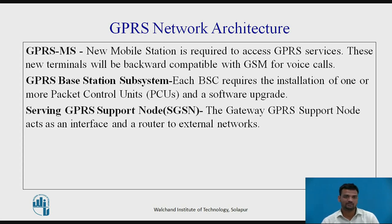GPRS Mobile Station (GPRS MS): new mobile stations are required to use GPRS service because existing GSM phones do not handle the enhanced air interface or packet data. A variety of MS can exist, including a high-speed version of current phones, new PDA devices with an embedded GSM phone, and PC cards for laptop computers. These mobile stations are backward compatible for making voice calls using GSM, but must include hardware to support packet data.